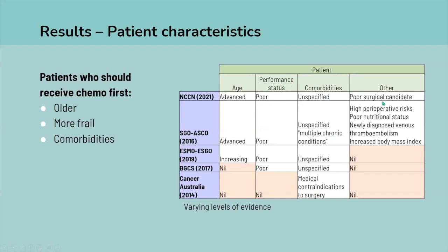Other patient characteristics described included 'poor surgical candidate' and 'high perioperative risk,' but once again, no clear definitions were given. There were varying levels of evidence for each of these factors, and the way different guidelines assessed evidence levels and strengths of recommendation also varied, making them difficult to synthesize.